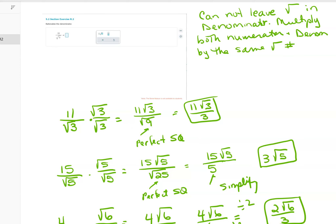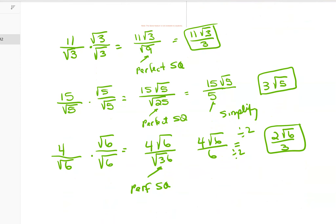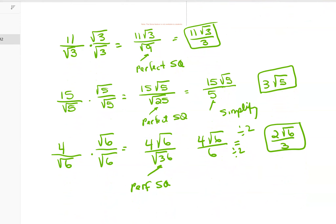Let's try another one: 15 over root 5. I multiply top and bottom by root 5 — again, this is just multiplying by 1. Looking at the denominator: 5 times 5 is 25, which is a perfect square equal to 5, so I get rid of the root sign. In the numerator, 15 stays on the outside, giving 15 root 5.